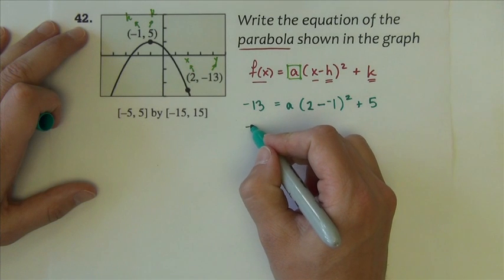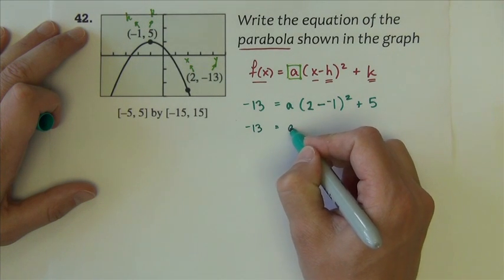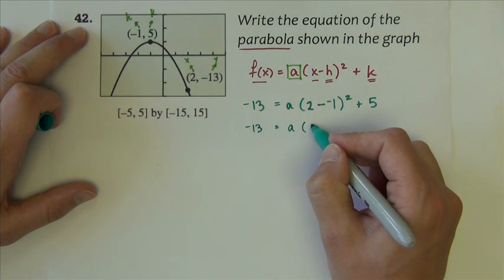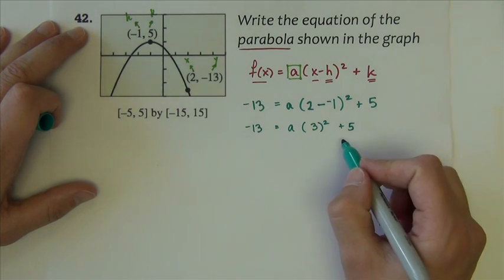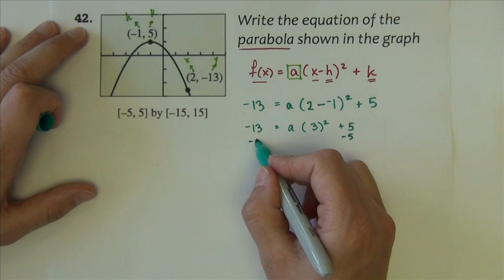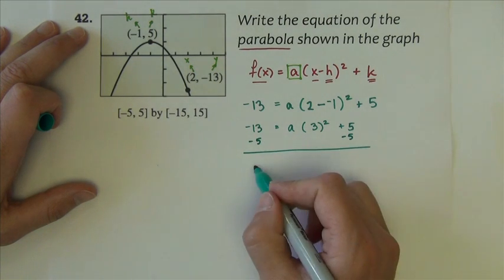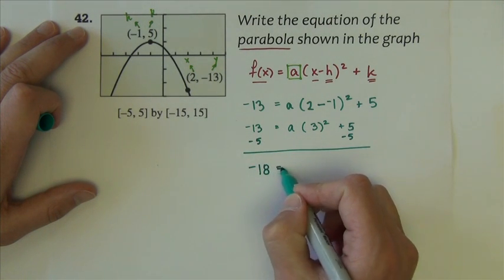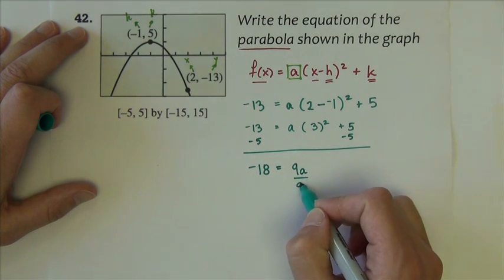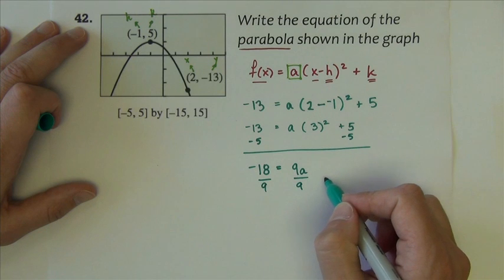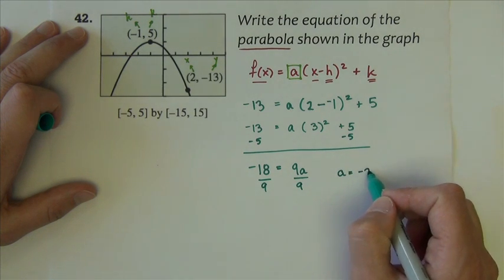The F of X is the Y value of that point, so negative 13 equals A times the X of the point minus the H, which is negative one, squared, plus the K, which is five. So we have negative 13 equals A times 3 squared plus 5. We can subtract the 5 across, so we get negative 18 equals 9A divided by nine, and we get A equals negative 2.